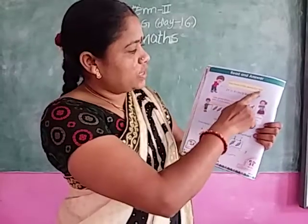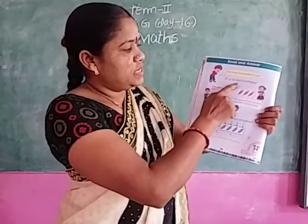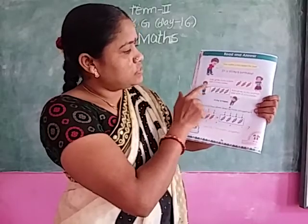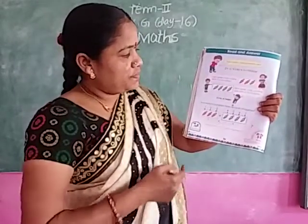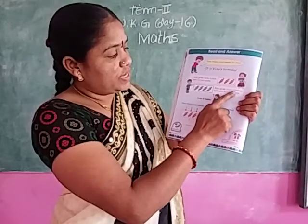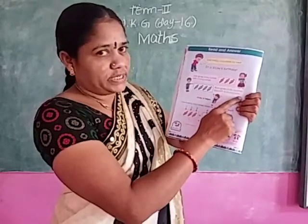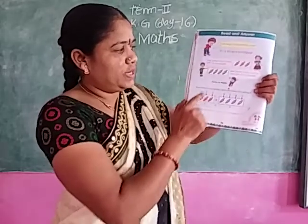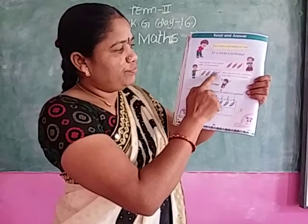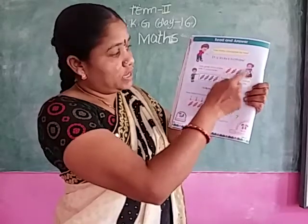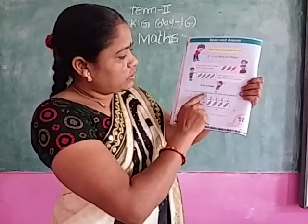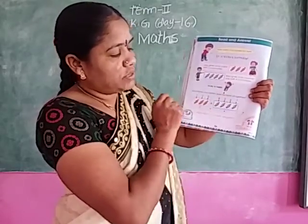How many chocolates? It is Vicky's birthday. Jolly gives Vicky a box with 3 chocolates — 1, 2, 3. Next, Ravi gives Vicky another box with 4 chocolates — 1, 2, 3, 4. First Jolly gives 3 chocolates, then Ravi gives 4. Now how many chocolates does Vicky have altogether?